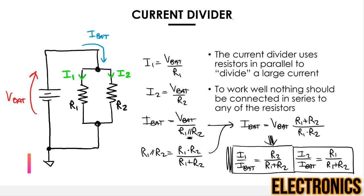This might seem strange but is very intuitive. In the voltage divider, for the same current, a higher resistor takes a larger portion of the input voltage. In the current divider, for the same voltage, the higher the other resistor, the higher the portion of current that prefers to flow in the resistor under study. The current tends to use the path of least resistance. If r1 is twice as big as r2, two-thirds of the current goes into the smaller r2 and only one-third goes into r1.